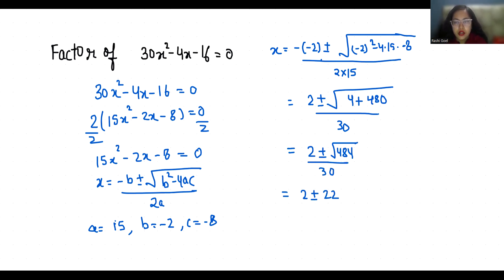So x₁ = (2 + 22) / 30 = 24/30, which equals 4/5. And x₂ = (2 - 22) / 30 = -20/30, which is -2/3.